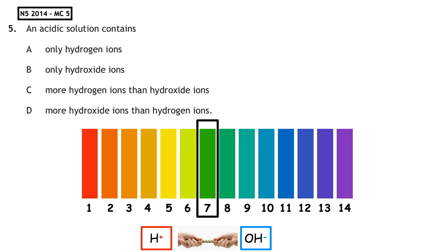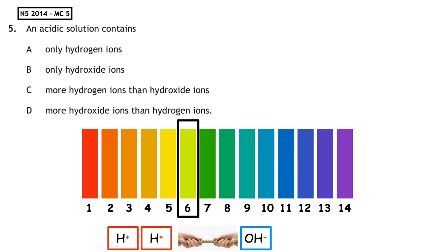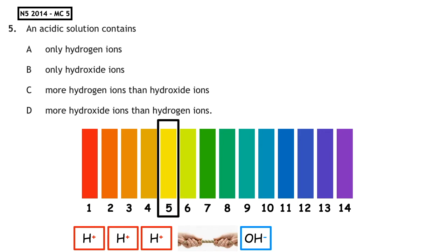This past paper question is from the National 5, 2014, multiple choice 5: 'An acidic solution contains...' We need to remember our key definition. We know from our tug of war that we have to have more players on the left-hand side than the right-hand side. So therefore, we have more hydrogen ions (H+) than hydroxide ions (OH-). The correct answer to this question is multiple choice answer C.